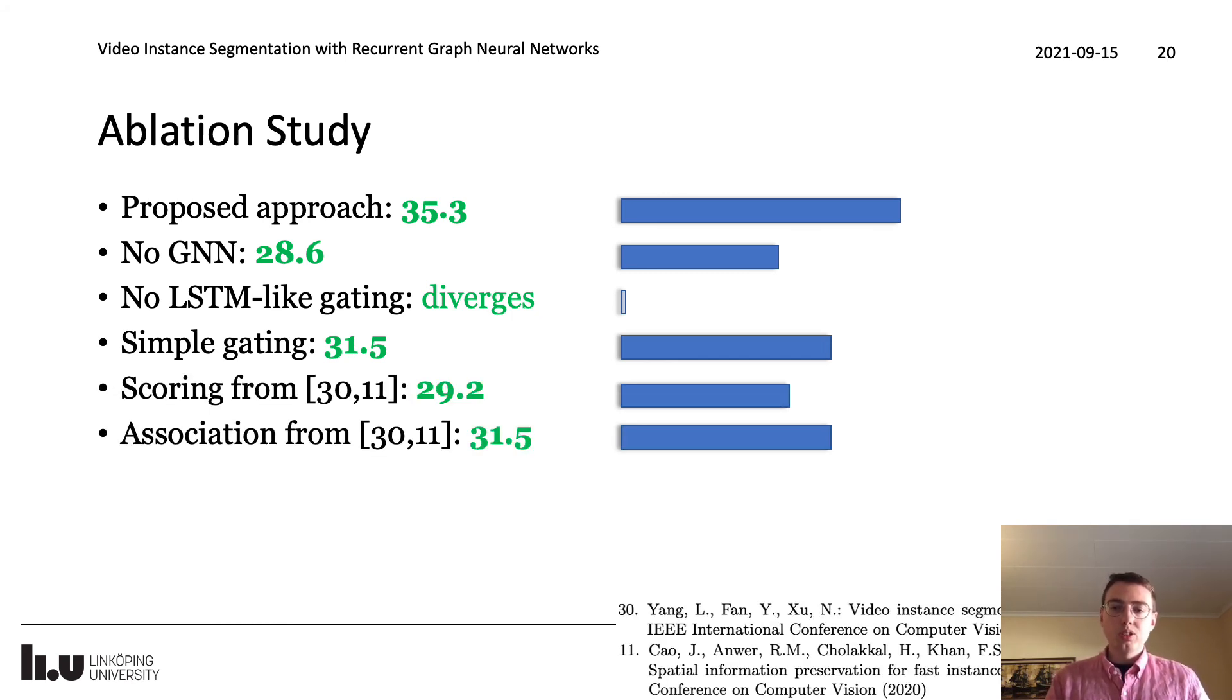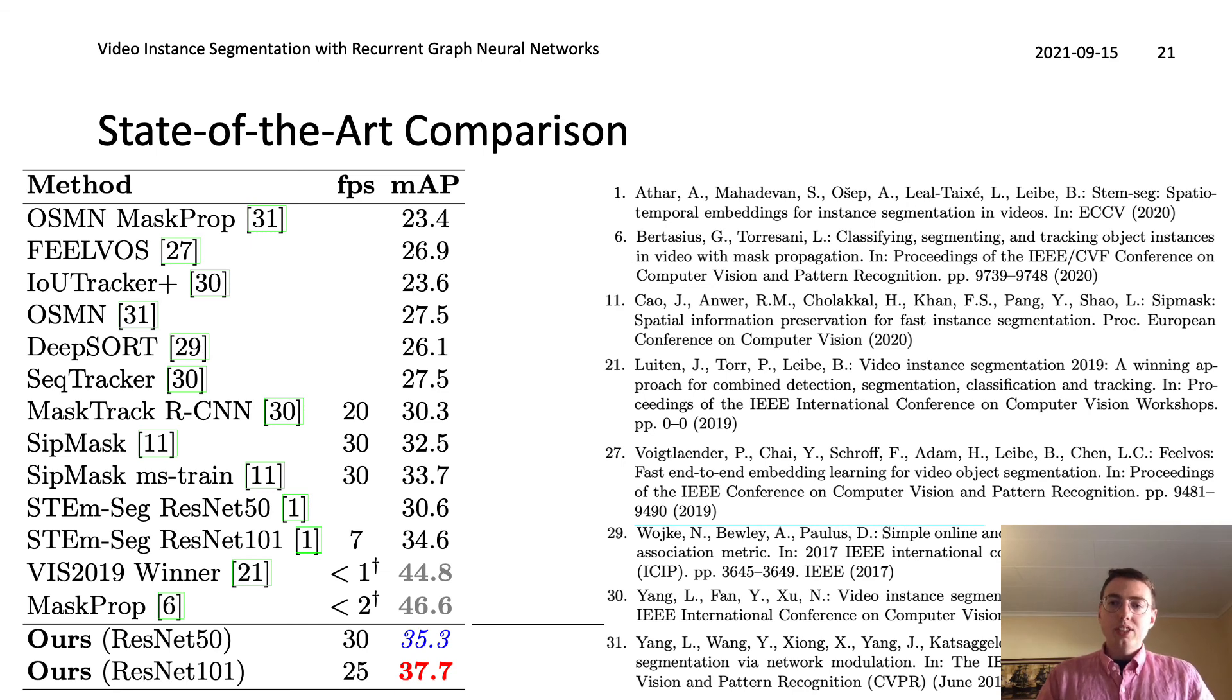We also compare letting our approach solve these four video instance segmentation subtasks to the approaches used in two prior works. First we replace our scoring with the mechanism used in their work. Then we also try to replace the track-detection matching and track initialization with a mechanism from their work. We also compare to the state of the art. This approach outperforms all prior methods but two. These two however rely on much stronger instance segmentation methods and while they obtain outstanding performance they run over an order of magnitude slower than our approach.